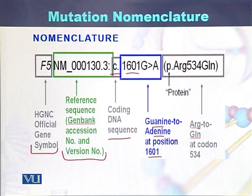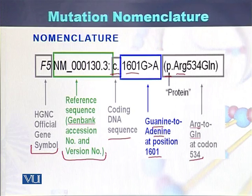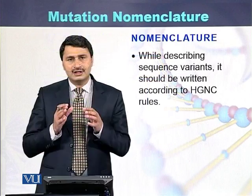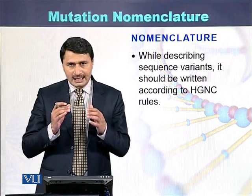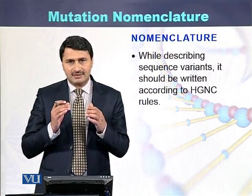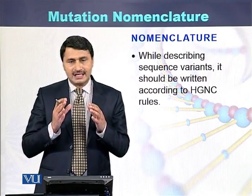At the protein level, 'p.' is used. In this example, arginine present at codon position 534 is replaced by another amino acid. So while describing variants found at the DNA, RNA, or protein level, we should follow the nomenclature described by HGNC.